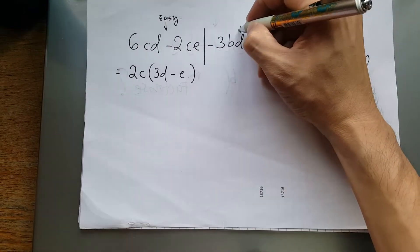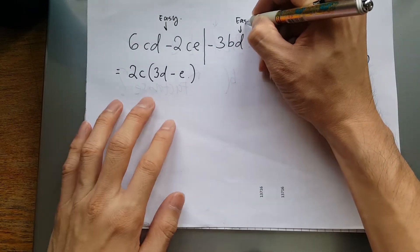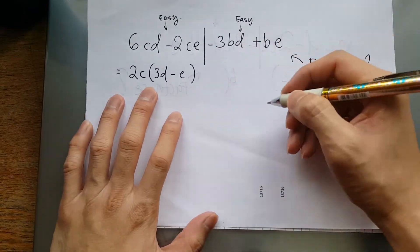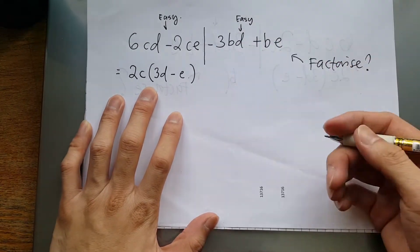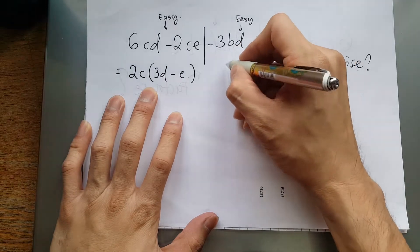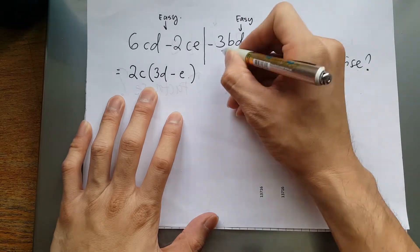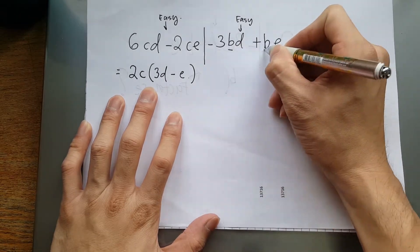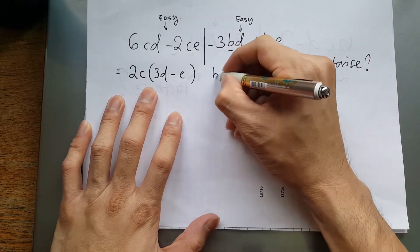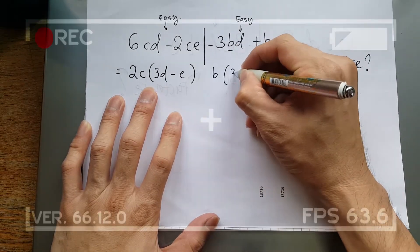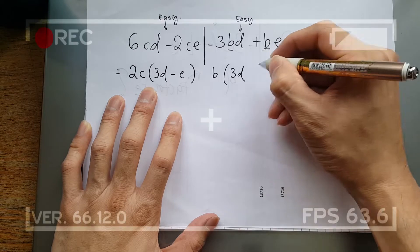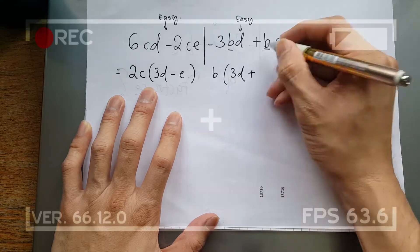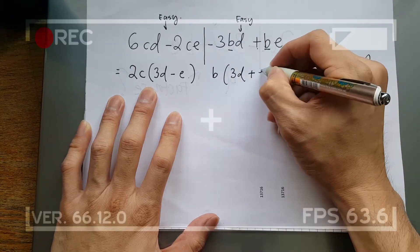Can I apply easy factorize one more time over here? You try it. So b repeats, I take the b out, then I have 3d plus e inside the bracket.